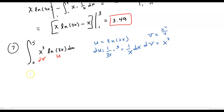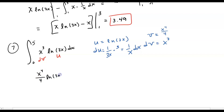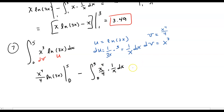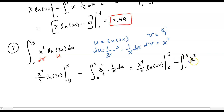Integrating x³ gives me x to the fourth divided by 4 — straight up power rule integral. Now I write it all together: I have my uv, which is going to be x⁴/4 times the natural log of 3x, evaluated from 0 to 5, minus the integral of v du, which is x⁴/4 times 1/x dx, also evaluated from 0 to 5. Simplifying, that gives us x³/4 inside the integral from 0 to 5.